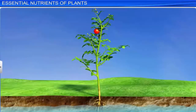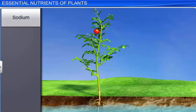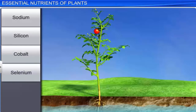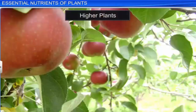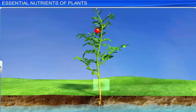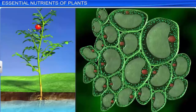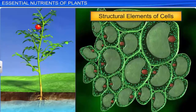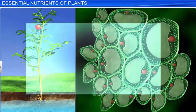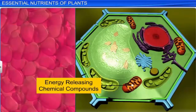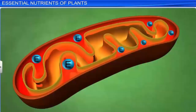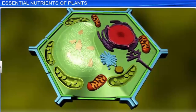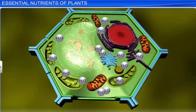In addition to the 17 essential elements, there are some beneficial elements such as sodium, silicon, cobalt, and selenium. Higher plants require them for their metabolism. Essential elements have different functions, based on which they are classified as structural elements of cells, components of energy releasing chemical compounds, activator or inhibitor of enzymes, and elements that maintain osmotic potential.